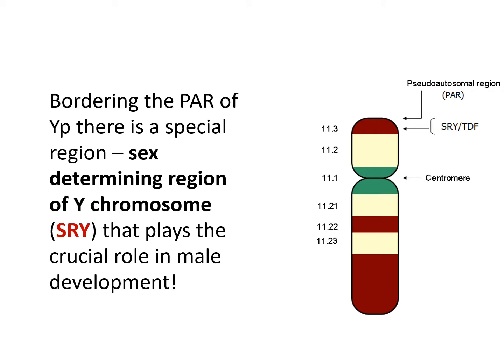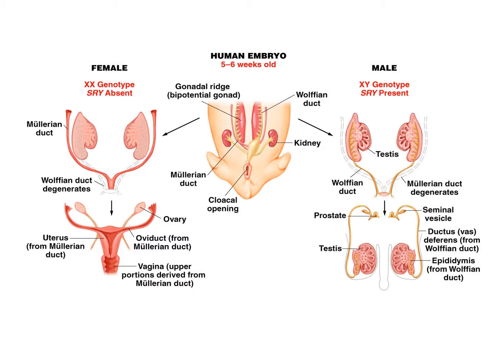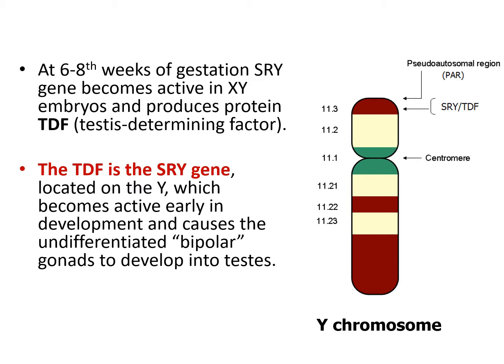Within the pseudoautosomal region there is a special region called the sex-determining region of the Y chromosome, or SRY. This region plays a crucial role in male development. In the human embryo at about five to seven weeks of gestation, when XX genotype is present and SRY is absent, it will turn into female. When the embryo contains XY and SRY is present, it will become male.